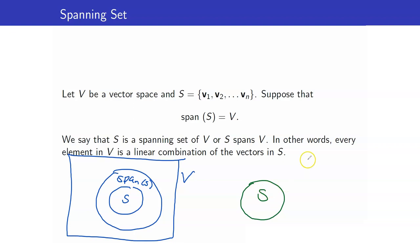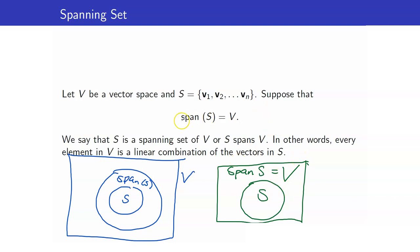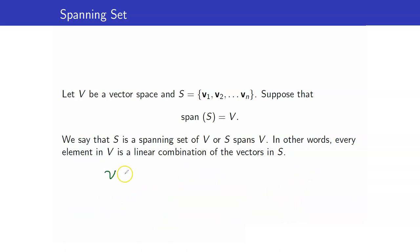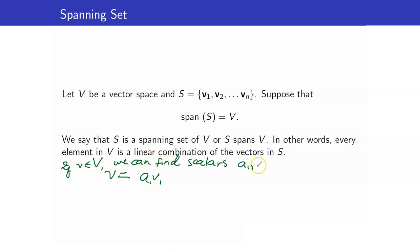So we have our set S, and the span of S is the entire vector space V. If the span of S is the entire vector space V, we say that S is a spanning set of V, or S spans V. What this means is that every element in V is a linear combination of the vectors in S. So if V is in V, then we can find scalars A1 up to An such that V equals A1·V1 plus A2·V2 and so on. These scalars always exist.